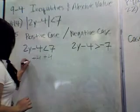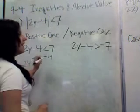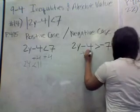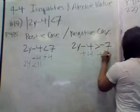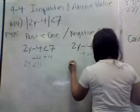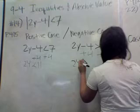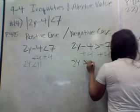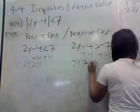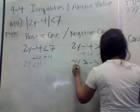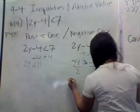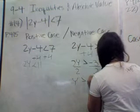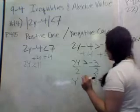We add 4 on both sides and get 2y is less than 11. On the negative case side, we add 4 and get 2y is greater than negative 3 — you don't switch the sign anymore since you already switched it. We're dealing with fractions now, so divide by 2 and get y is greater than negative 3 over 2.